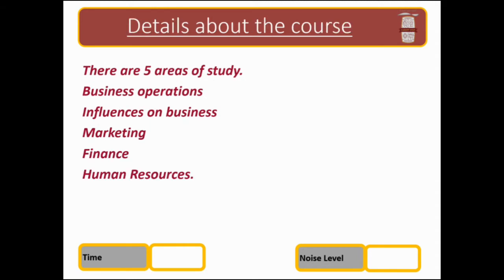There are five areas of study. The first is Business Operations, which we deal with first because it covers the different types of business that exist, from a sole trader to a public limited company. This talks about the different ways in which businesses are run, the different motivations that businesses have, and the different ways in which people are hired or utilised within the business.